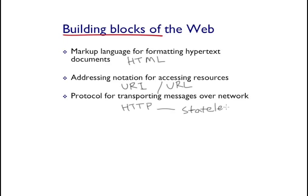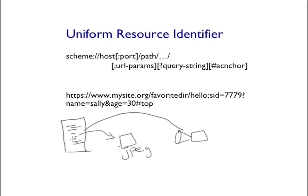Web pages contain objects — they can be textual in nature, or they can be hyperlinks to images or videos. To access these objects we need what we call a Uniform Resource Identifier to uniquely access each one. This is the general form of the URI, and it starts with the scheme, which represents the protocol being used to transport the object.